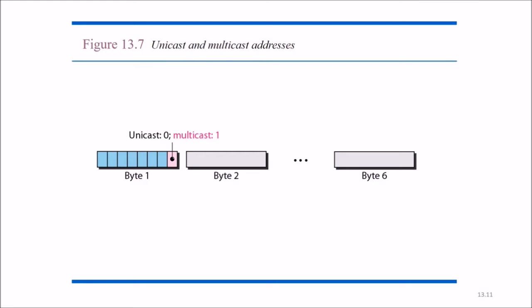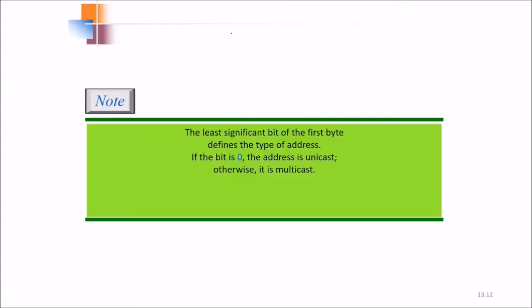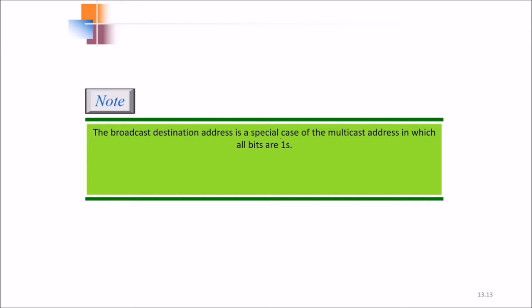Multicast and unicast address: unicast means 0, it will go to only one path or one destination. Multicast, if this is 1, then it will go to various accepters or receivers. So the least significant bit of the first byte defines the type of address. If it is 0, the address is unicast; otherwise it is multicast, sent to various receivers. The broadcast destination address is a special case of the multicast address in which all the bits are ones.